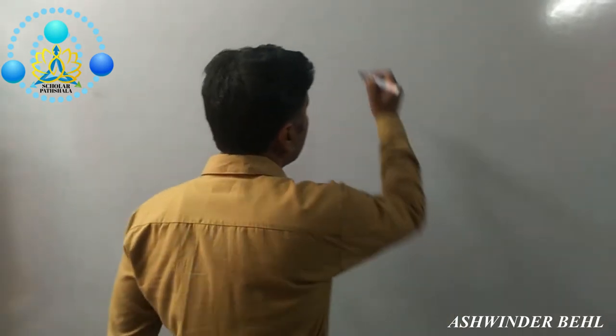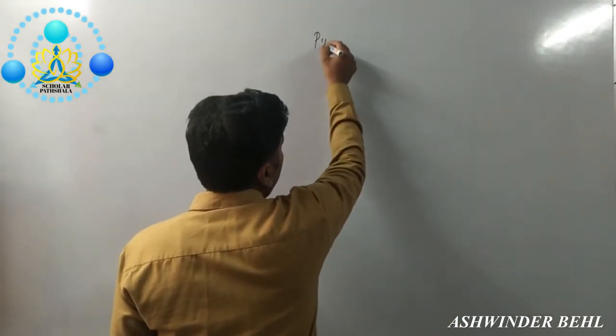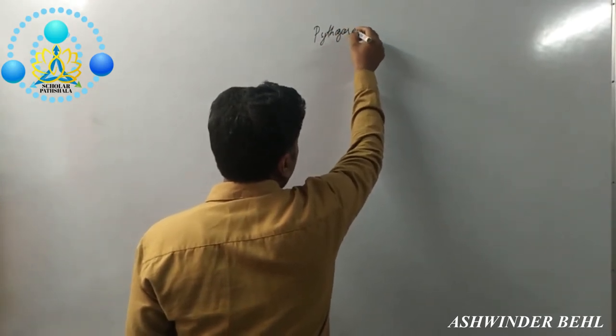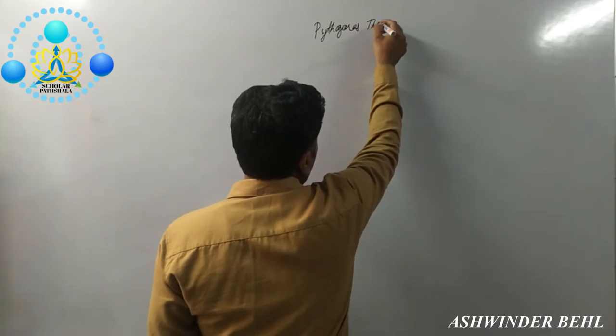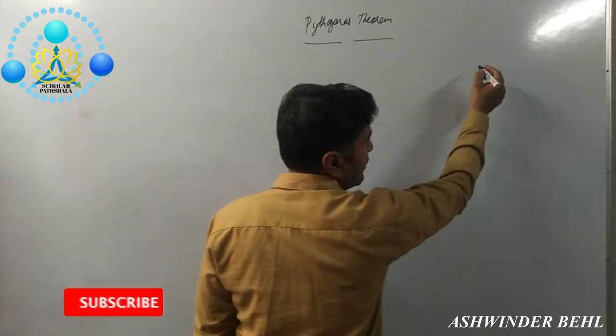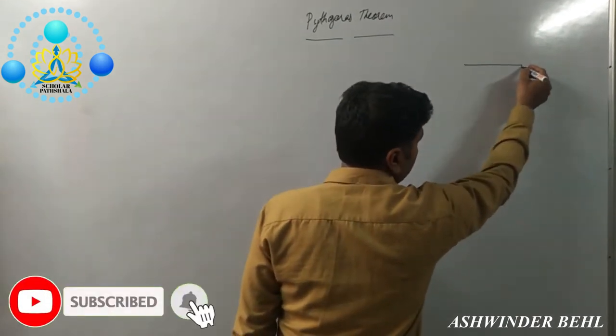So, how we can prove Pythagoras theorem. First of all, we will draw a square.